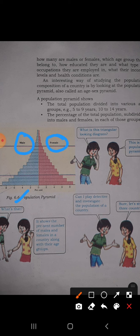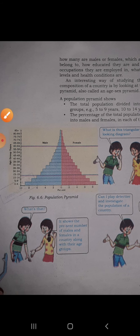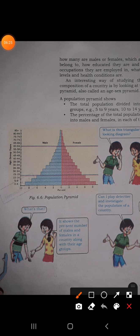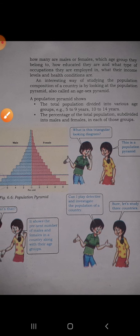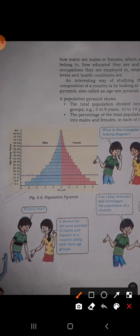The population pyramid shows that the bottom area shows the percentage of population, and the side axis shows the age group. In the population pyramid, we can see the percentage and how many people are in each group. The total population is divided into various age groups, and the percentage of the total population is divided into male and female.